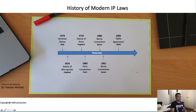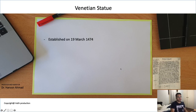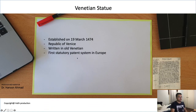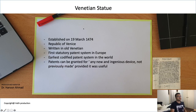Let's talk about each of these landmark events in patent history in detail. The Venetian Statute, as you can see in this document written in ancient language, was established on 19 March 1474 in the Republic of Venice, which is now part of Italy. It's written in old Venetian and is the first statutory patent system in Europe — the earliest codified patent system in the world. According to this statute, a patent can be granted for any new and ingenious device not previously made.